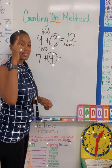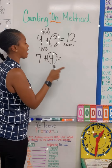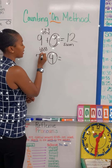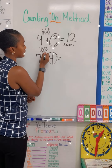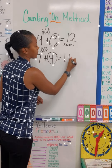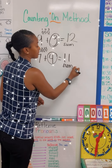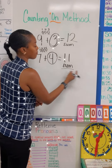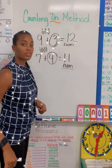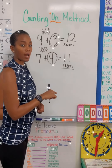I say 7 in my mind, and then I count forward 8, 9, 10, 11. 11 is going to be my sum. Remember that sum is the answer inside an addition problem.